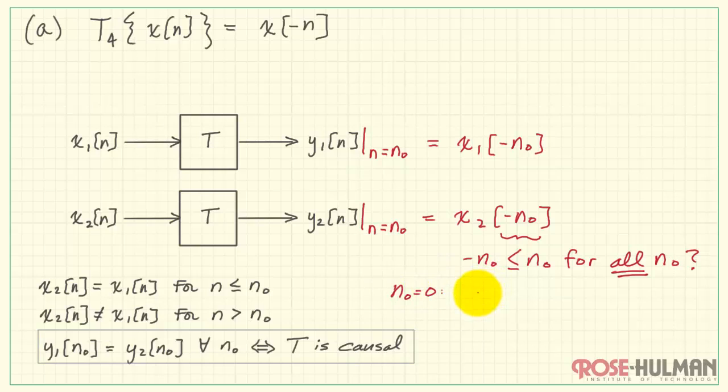Let's ask the question this way: Is minus n0 always less than or equal to n0? Well, let's take some specific examples. If n0 was equal to 0, we would have the statement, Is minus 0 less than or equal to 0? Yes, that works. How about n0 equals 3? This would say, Is minus 3 less than or equal to 3? And the answer is yes. How about negative 2? Ah, here we see something different. Now we're saying, Is 2, rather, less than or equal to minus 2? The answer clearly is no.